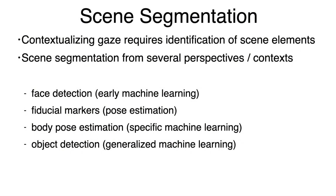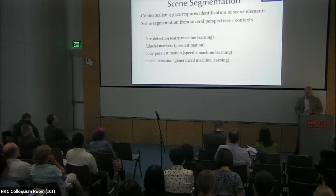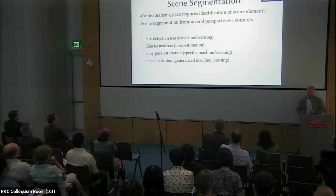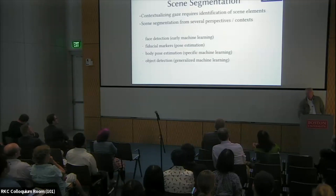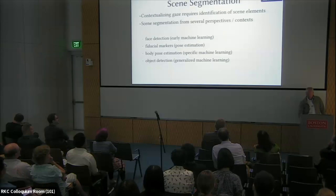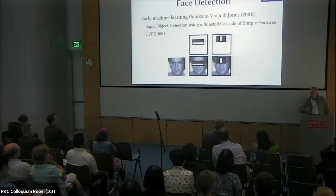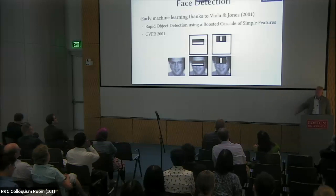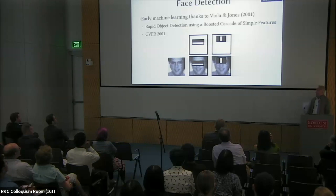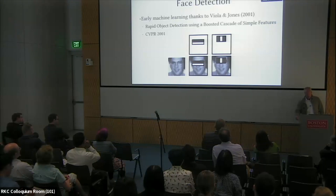I split the talk into four segments: face detection, traditional markers — I'm going through chronologically to give a computer science perspective on what we can do to identify the real world, what's easy, what's hard. This is the famous Viola-Jones paper from 2001 — believe it or not, it's an early artificial intelligence paper, training cascaded features to get face detection. It works really nicely in OpenCV.